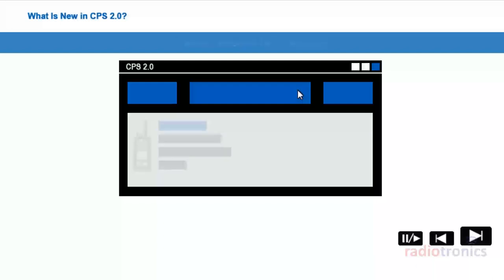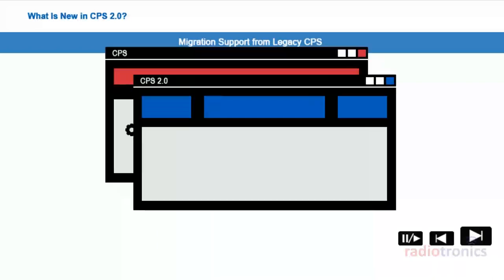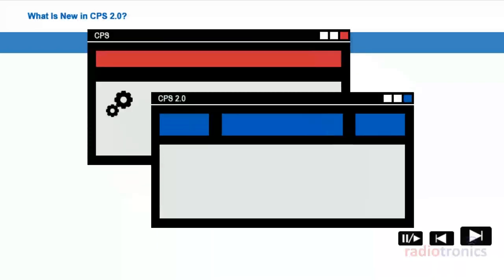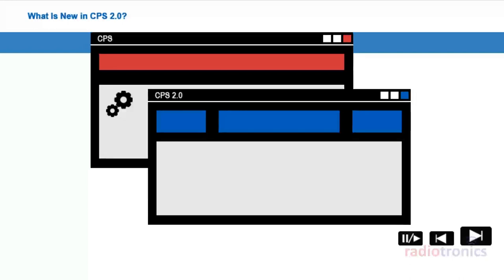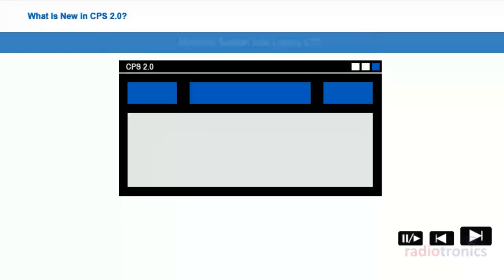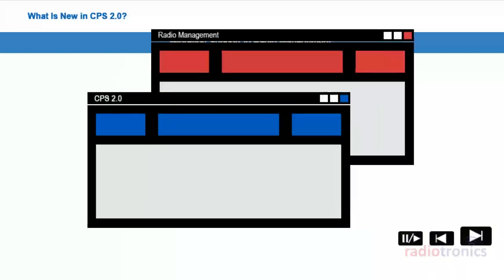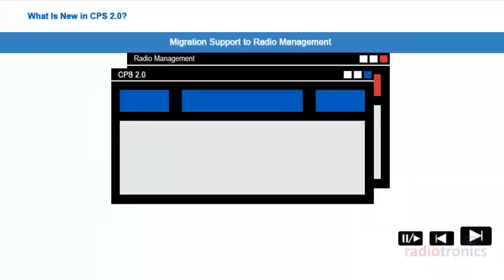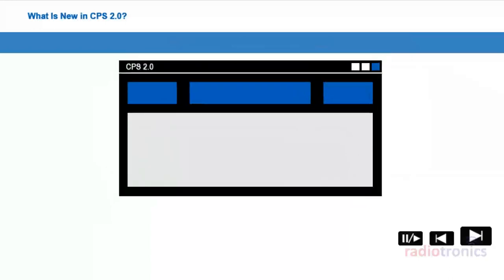Migration support from legacy CPS: CPS 2.0 allows the user to open code plugs used in legacy CPS and save them in the new file format. Migration support to Radio Management: the procedure to migrate from CPS 2.0 to radio management has been simplified. Clone Express: a new workflow that allows the user to build a code plug and clone it with a single button press.